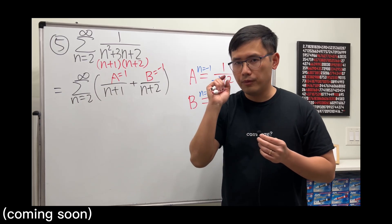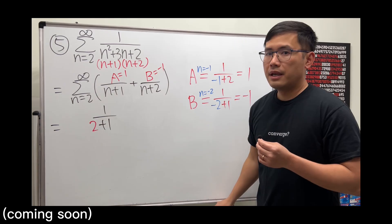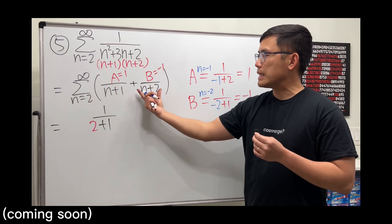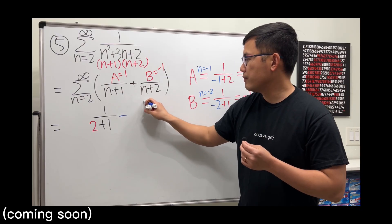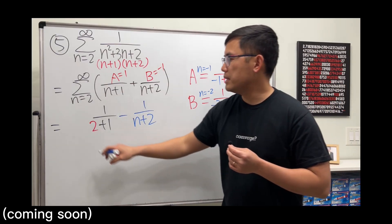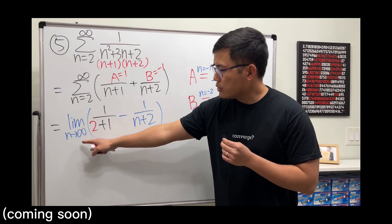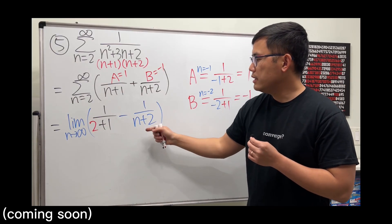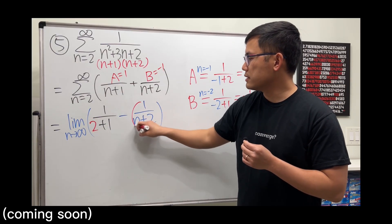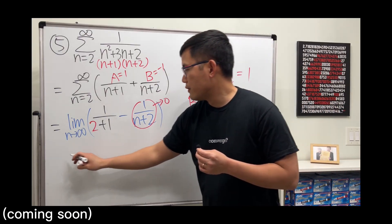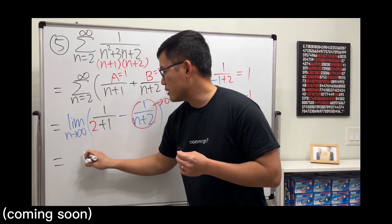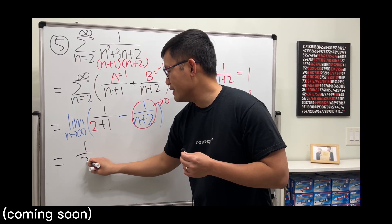Plug it into the first term only one time, then subtract this part just one time, then take the limit as n goes to infinity. This is going to give us zero, so the answer is just one over three.